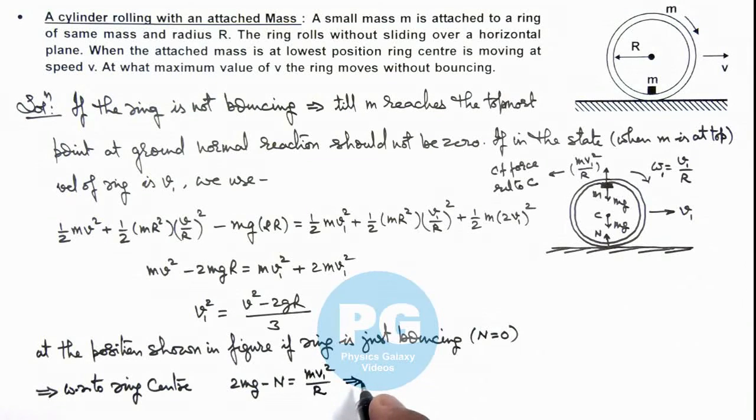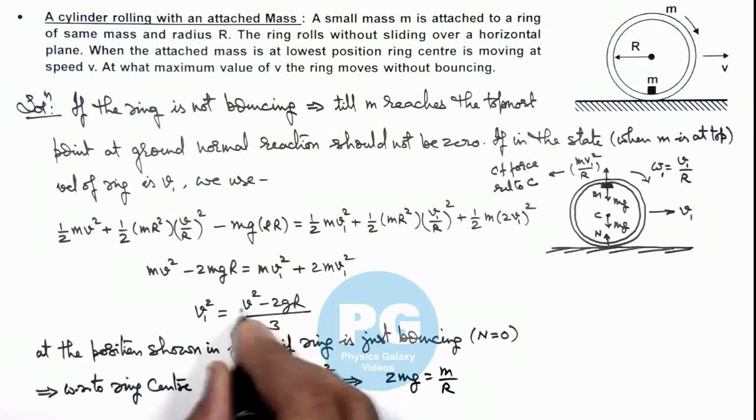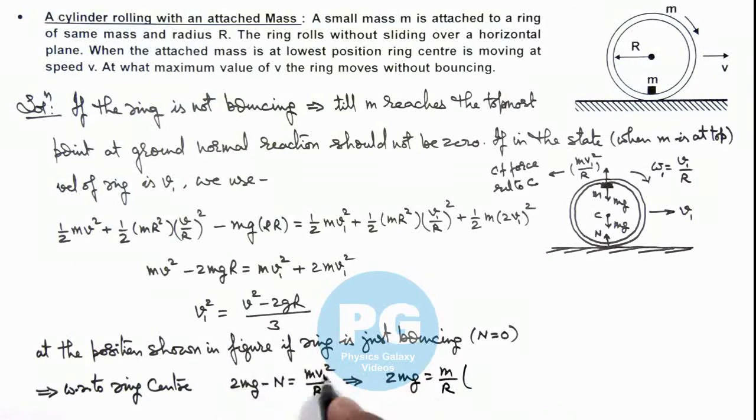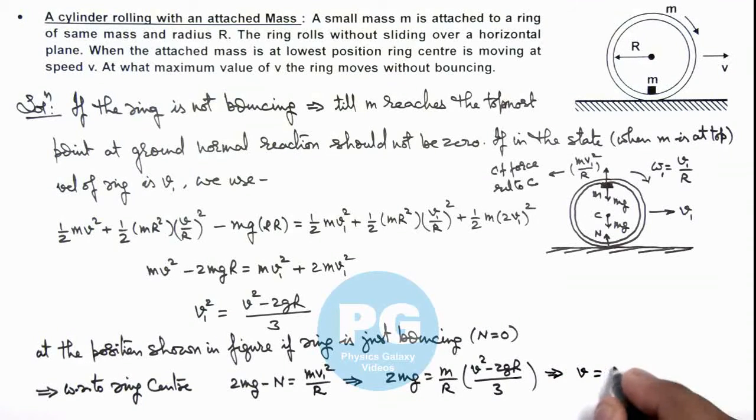So here we can write the value we are getting is 2mg is equal to m by R multiplied by v1 square. v1 square we can write as v square minus 2gR by 3. On simplifying this we'll get the value of v, that is root of 8gR. That is the result of this problem.